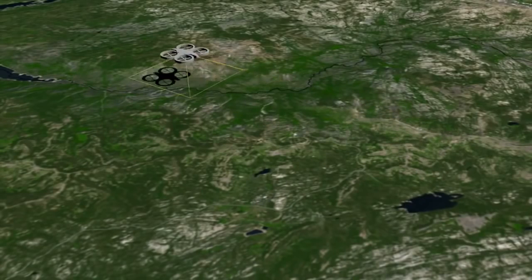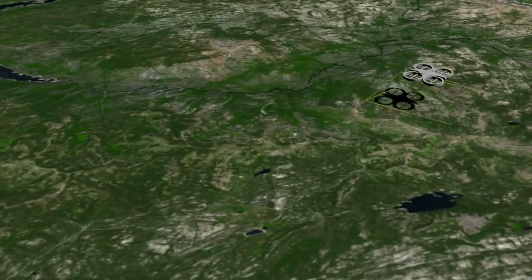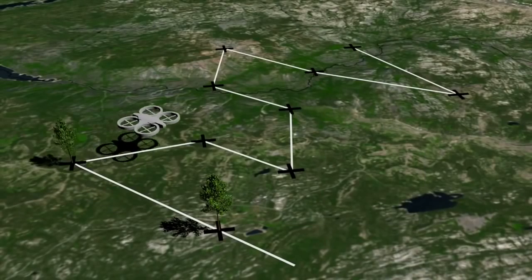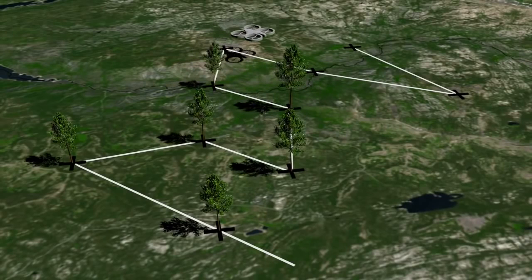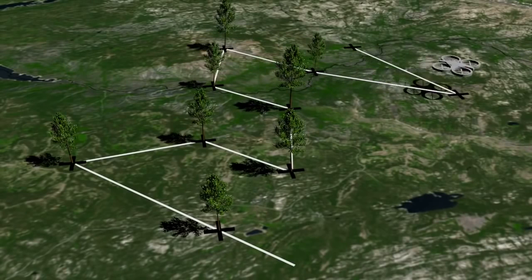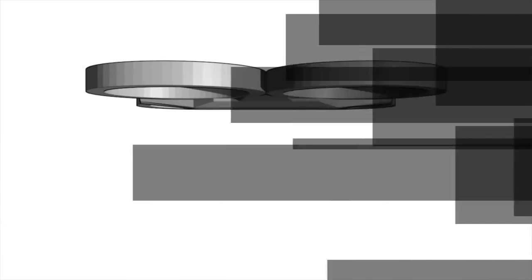Phase 2 involves the use of automated planting UAVs. These fire biodegradable, nutrient-rich seed pods into the ground from a height of 1 to 2 metres. The planting UAVs follow a predetermined planting pattern represented here by the crosses on the ground.